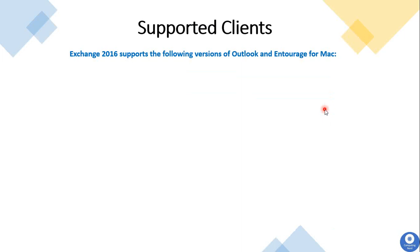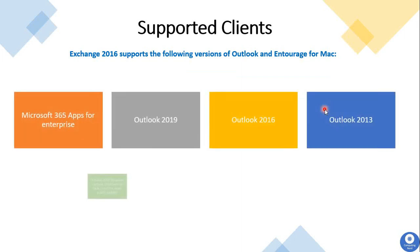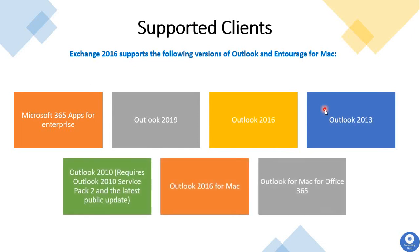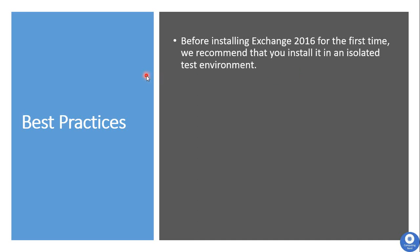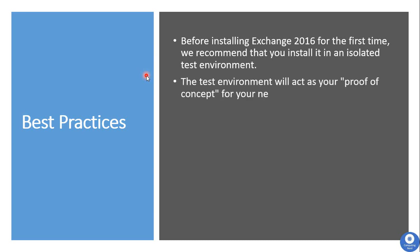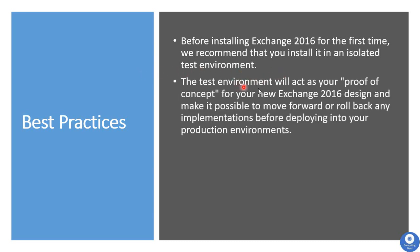Next are the supported email clients for Exchange Server 2016. Exchange Server 2016 supports the listed Outlook client versions. Now for some best practices for Exchange Server 2016: before installing Exchange 2016 for the first time, it is recommended to install it in a test environment first. With this approach, we can reduce risk in our production environment and test all the details we need. The test environment will act as a proof of concept for the new Exchange Server 2016.